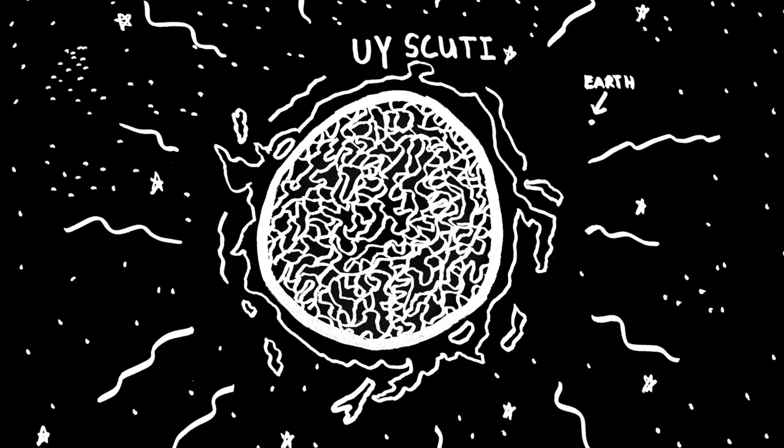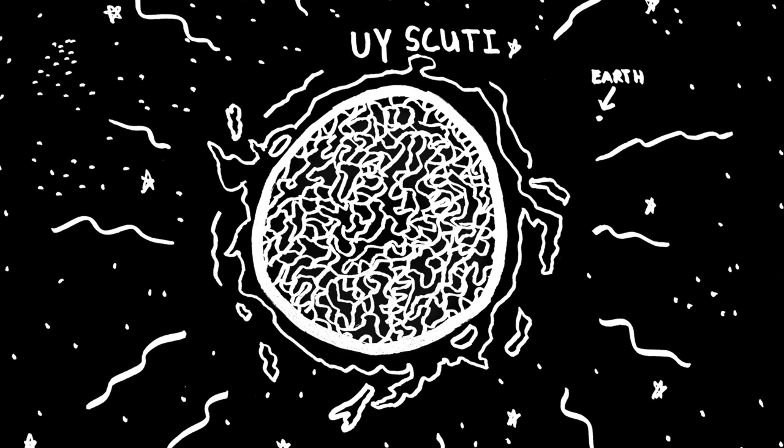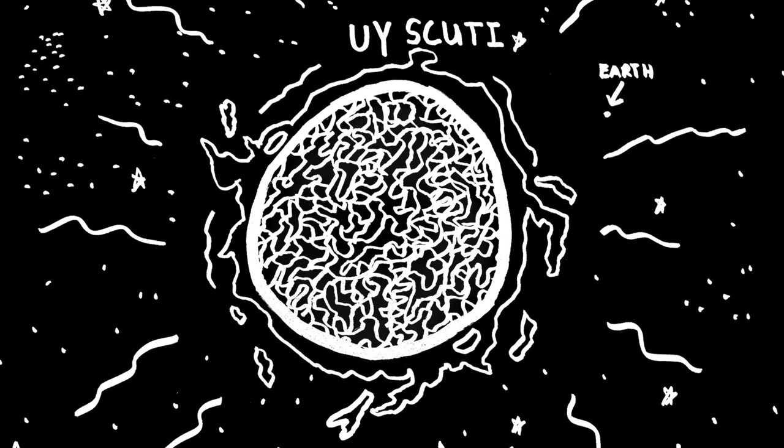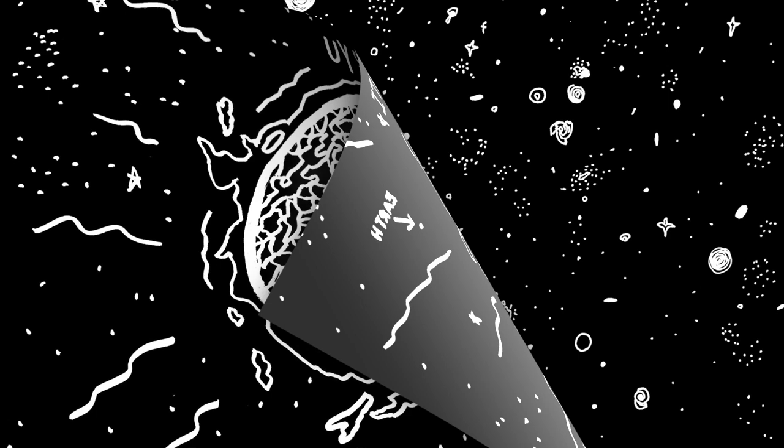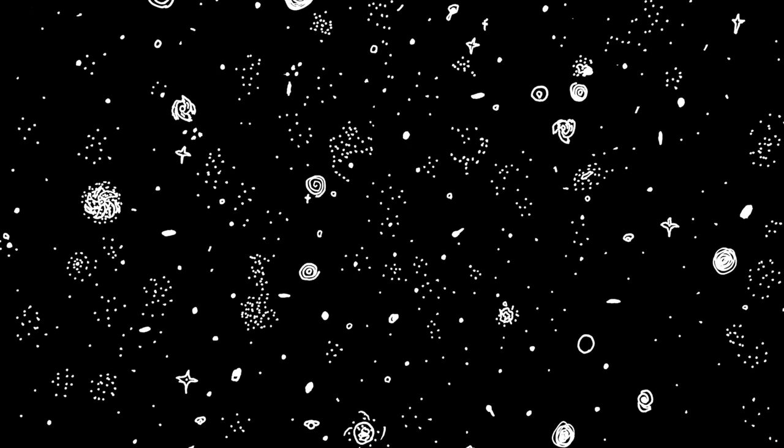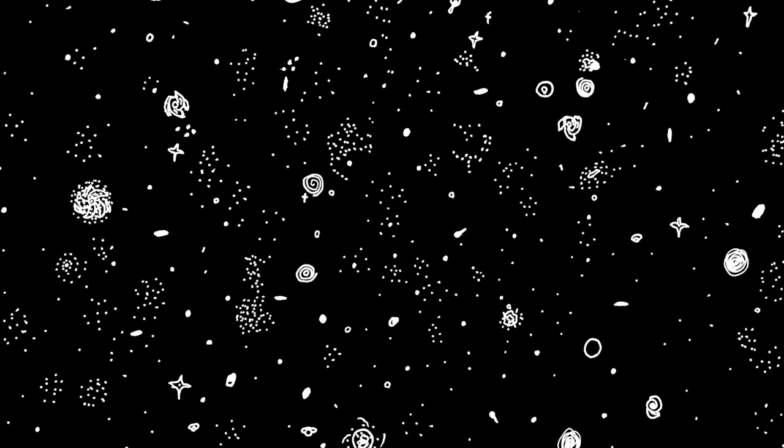To get a more visual representation of space scale and how terrifying it can be, all you have to do is look at stars and how vastly different they can vary in size. Actually found in 1860, UY Scuti is a red supergiant which currently holds the trophy for the largest known star. Put it next to our own Sun and you'll find that UY Scuti is around 1700 times the size of the Sun. 1700 times the size!